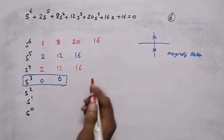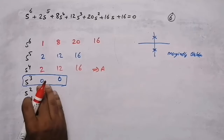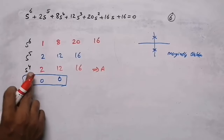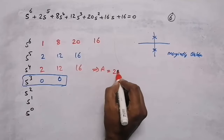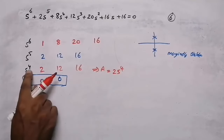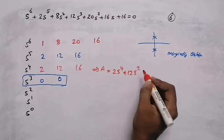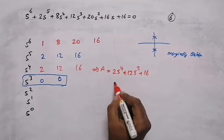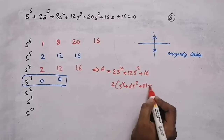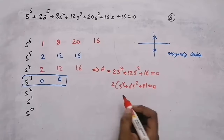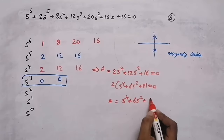To proceed, we write the auxiliary equation by taking the row just ahead of the all-zero row, which is the s^4 row. The auxiliary equation is 2s^4 + 12s^2 + 16 = 0. Taking 2 outside, we get s^4 + 6s^2 + 8 = 0.